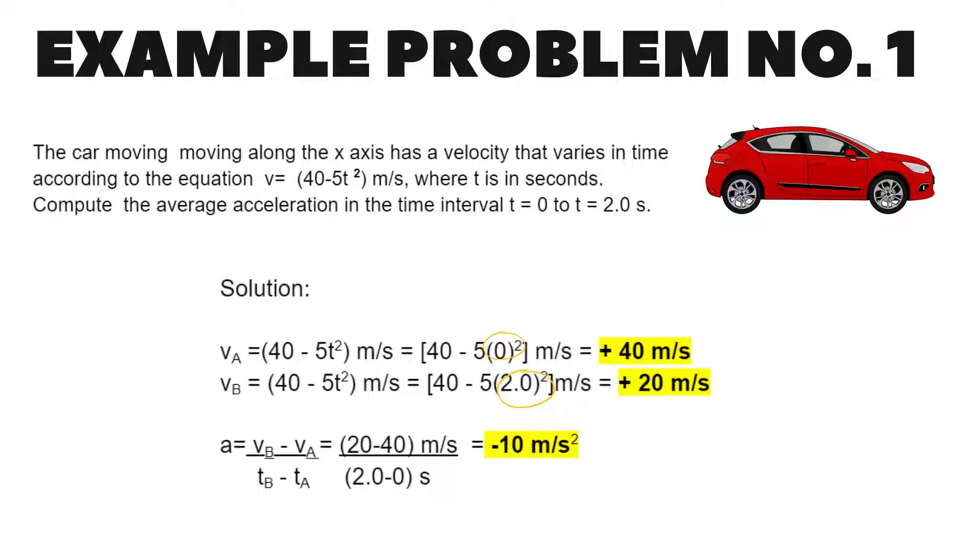Acceleration is equal to V sub b minus V sub a divided by T sub b minus T sub a. That is equal to 20 minus 40 meter per second divided by 2 minus 0 second. That is equal to negative 10 meter per second squared.